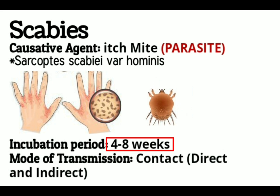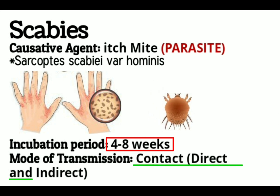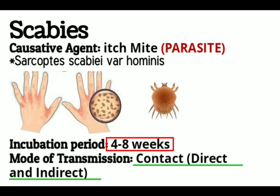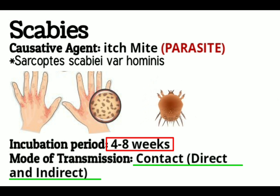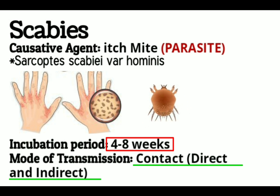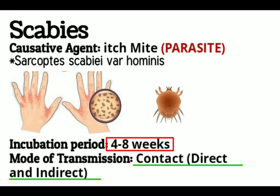What is the mode of transmission of scabies? The mode of transmission is primarily contact — either direct or indirect. Scabies is usually spread by direct, prolonged skin-to-skin contact with a person who has scabies. Contact generally must be prolonged; a quick handshake or hug will not usually spread scabies. It is spread easily to sexual partners and household members.